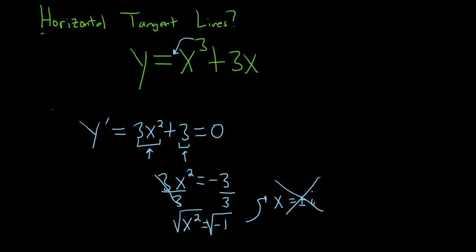And that's no good, right? We're not dealing with complex numbers here. We want only real values of x. So there is no place on the graph of this function where the slope is 0.